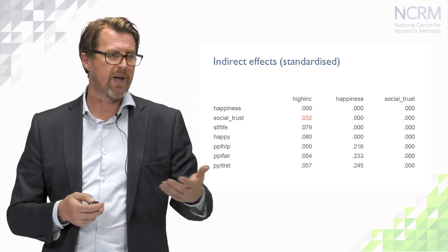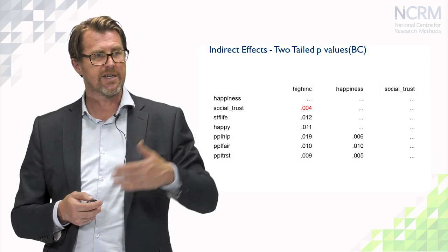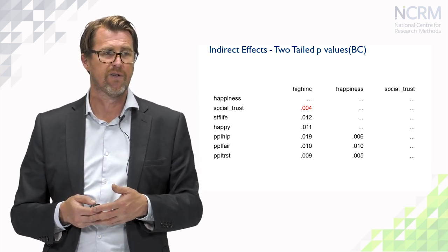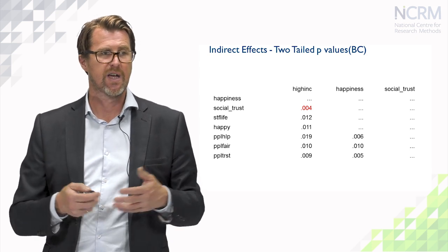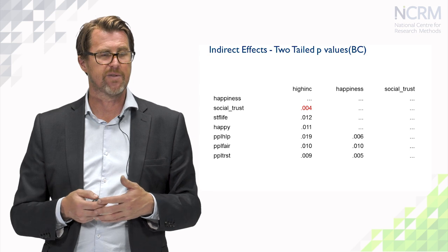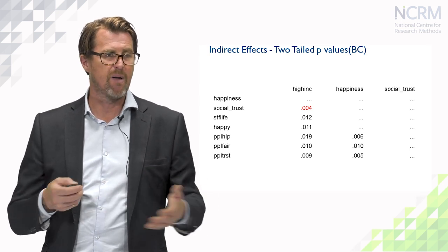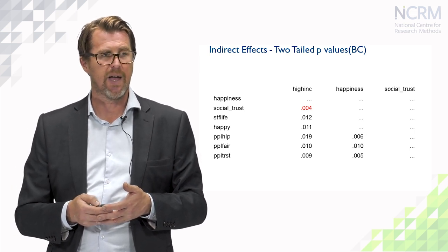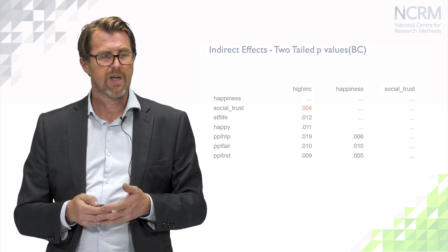SEM software also provides standard errors either through bootstrapping or parametric estimation. The two-tailed p-value for that indirect effect of income on social trust is significant at the 95% confidence level, so we can reject the null hypothesis that there is no indirect path between income and social trust. That's a brief look at fitting mediation models and the advantages of doing this within a SEM context.